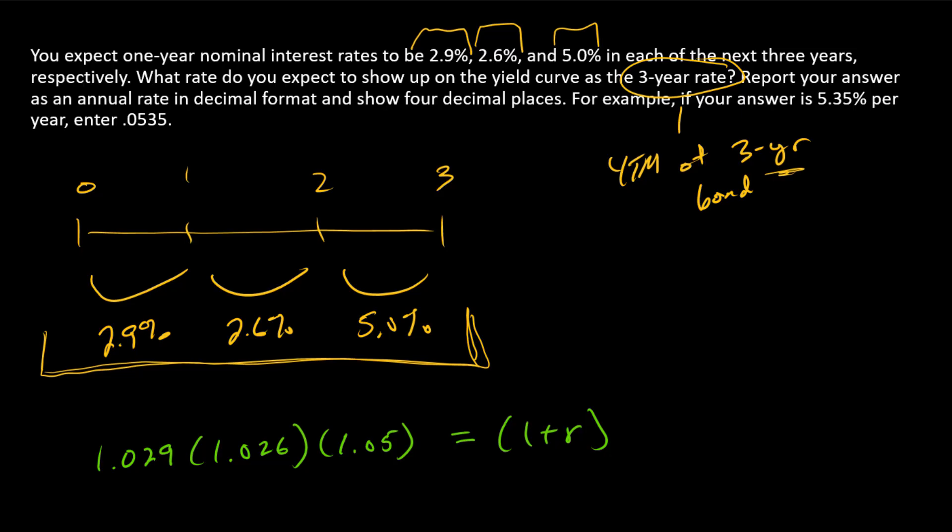For a three-year rate to capture this same scenario, we could either invest at the series of one-year rates or invest for three years at some single rate r, and we want to get to the same point. That's why we have the equality here.